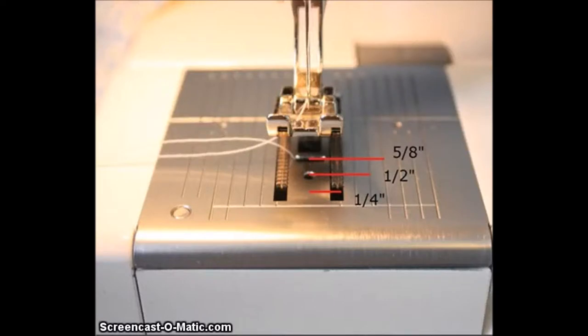This shows the guidelines on the needle plate of a sewing machine, and you can see where the needle comes down right here. This is the point where the seam is made in the fabric, and then the lines over here to the right